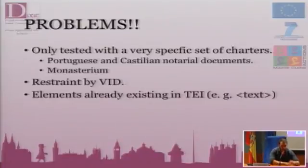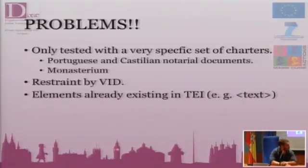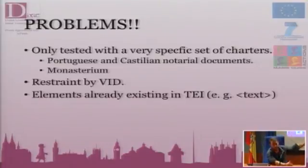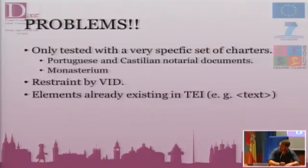The problem is that I've been testing this model with my corpus of documents, which is very small. I'm included in a project run by some Portuguese and Spanish professors that will give me a larger testing bench, and I'm also working with the people from monasterium.net. Another problem is that my model is constrained by the vocabulaire international, so I cannot include any concept not already there. Also, some elements already existing in TEI — such as 'text' — mean different things in our discipline, so I need to figure out how to reconcile these.